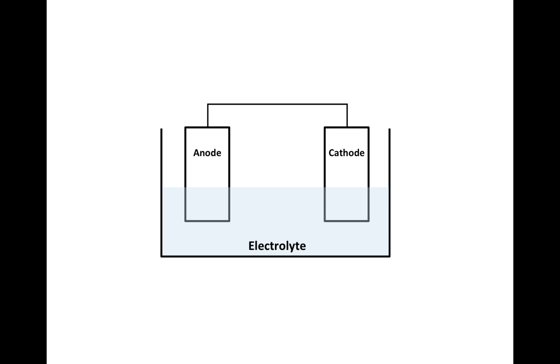The anode will be a more reactive metal, and the cathode a less reactive metal. Electrons flow from the anode to the cathode, and through the electrolyte, ions can flow in both directions.